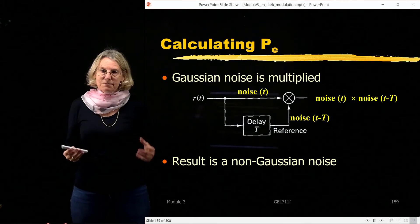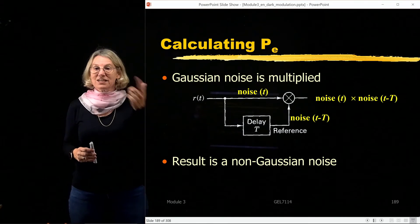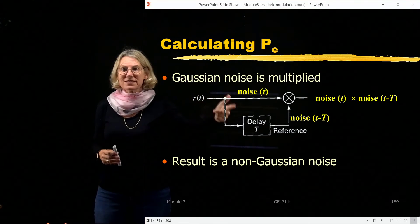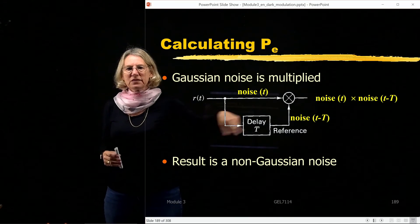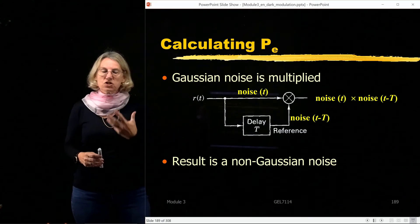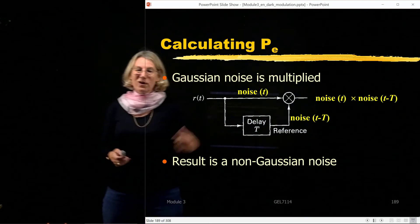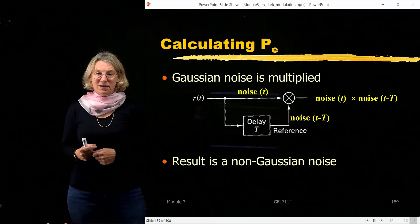So what happens is, I have the original received signal, which is signal plus noise, transmitted signal plus noise, and I split that into two branches. So in this first branch, I have a noise at a certain time t, but now I've put in this delay, so now I have a noise at a different time t.